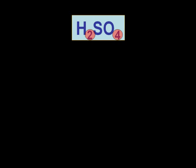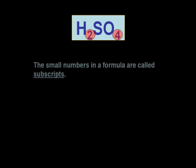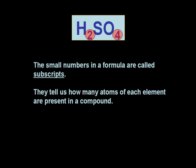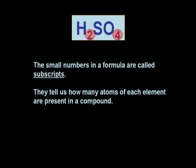If we take a closer look at a formula — here we have sulphuric acid, H2SO4, on the screen. The small numbers are known as subscripts. These tell us how many atoms of each element are present in a compound. If no number is present, this tells us that there is one atom of that element.